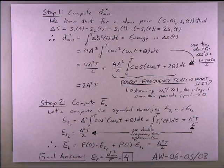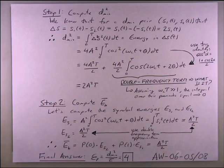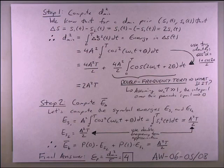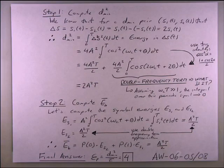The double-frequency term trick is crucial. When I took this course in 1999, I had no idea why the professor kept dropping those terms. It makes total sense now: peaks and valleys of the sinusoid cancel when integrated over a full period. Using this shortcut saves a lot of pain in calculating d_min or average bit energy — similar to the β+1 rule in microelectronics that simplifies complex transistor circuit analysis.